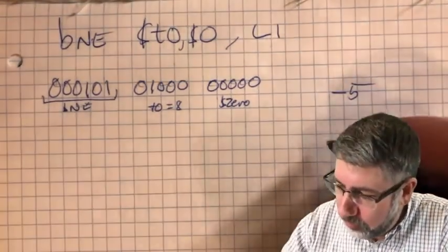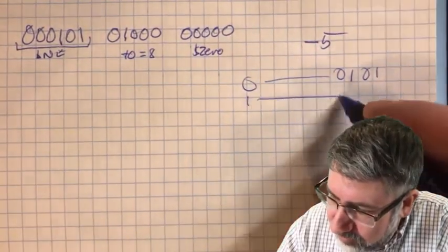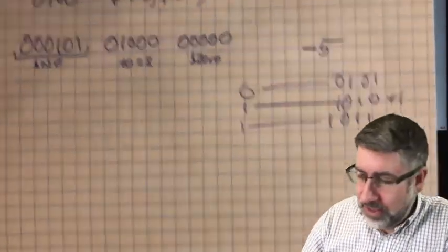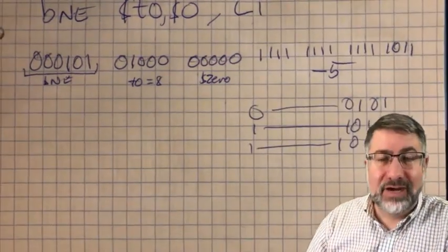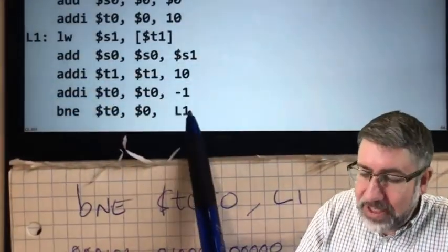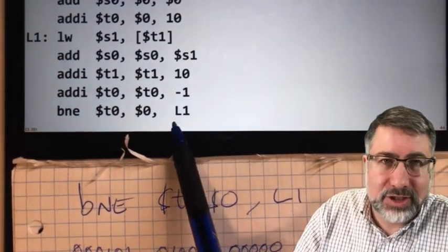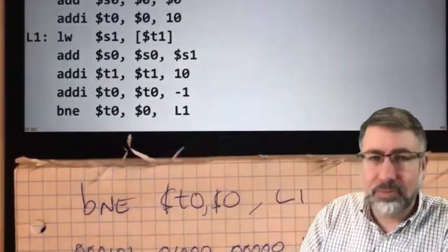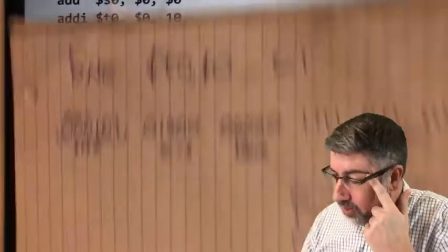What is negative five in binary? Five is 00000000000000000000000000000101. We flip the bits to get 11111111111111111111111111111010, then add one to get 11111111111111111111111111111011. So for the 16-bit immediate field, negative five is 1111111111111011. Breaking into groups of four for hex: 1111 = F, 1111 = F, 1111 = F, 1011 = B. The full 32-bit instruction encodes as 0x1500FFFB. That is the hex encoding for the branch instruction that takes you backwards five instructions.